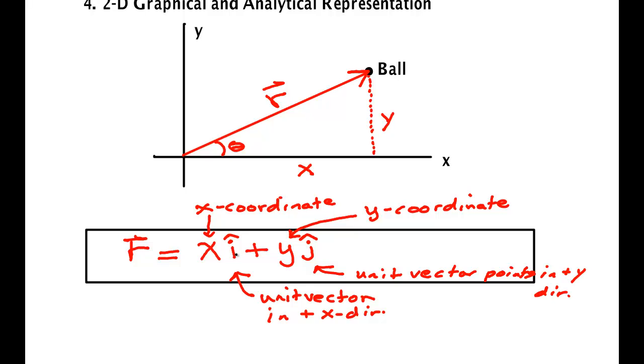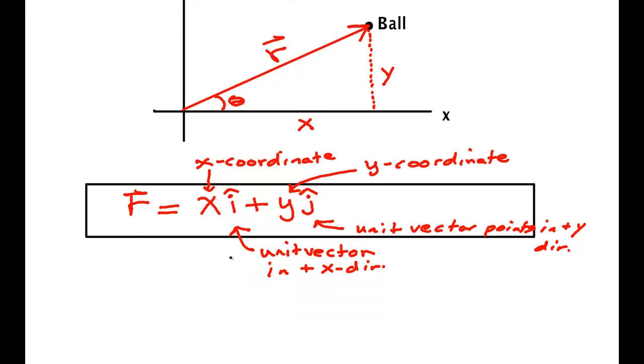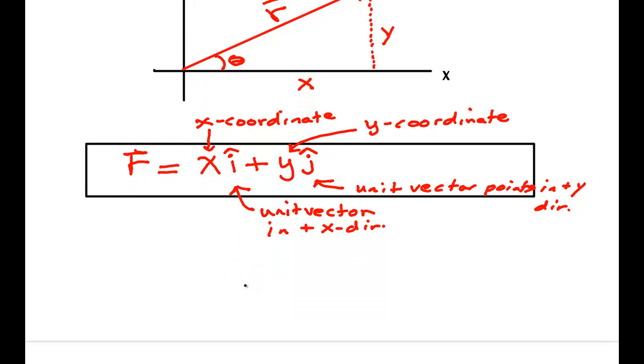Let's draw an example of one where we could write this in Cartesian form. We might, for example, have one that looks like three meters i hat plus four meters j hat.